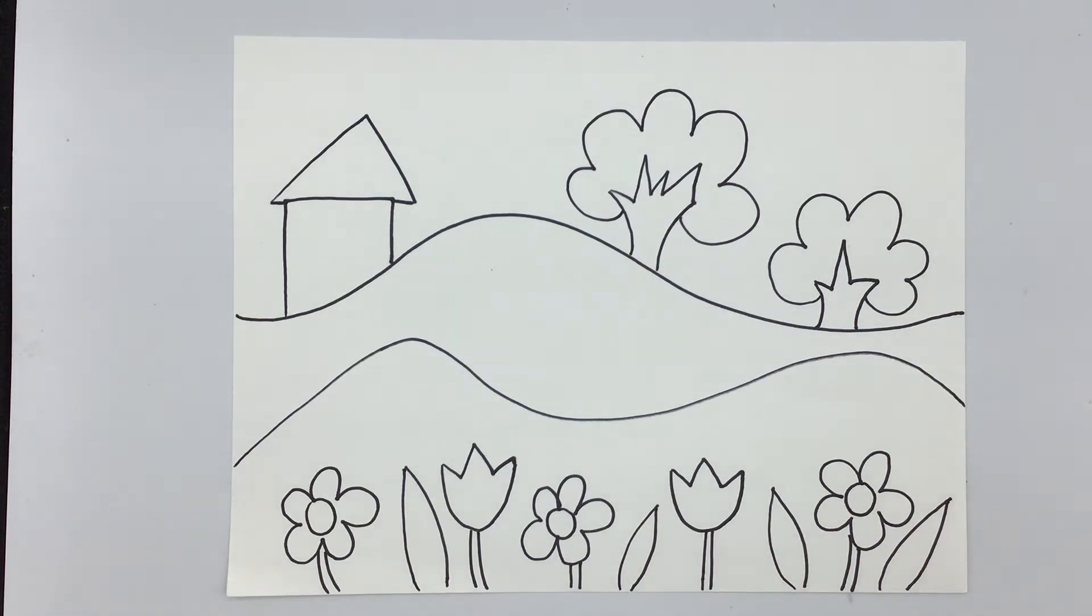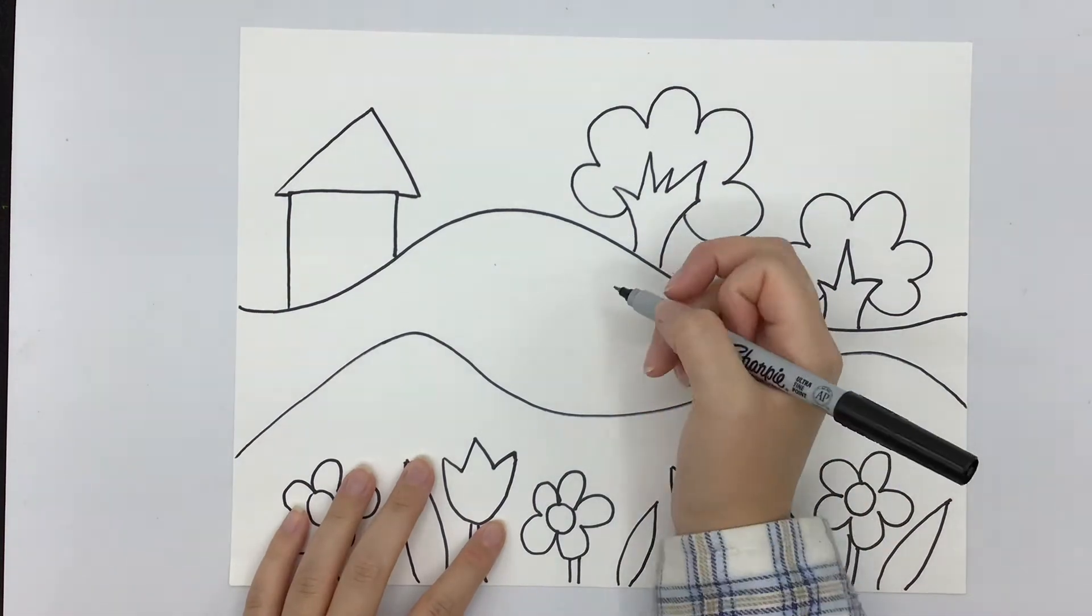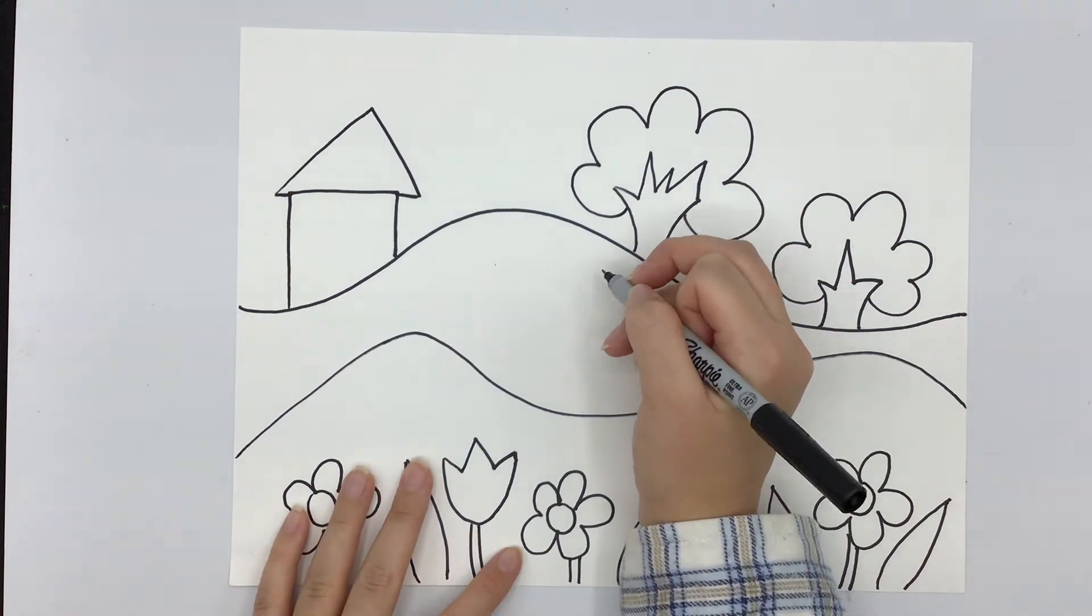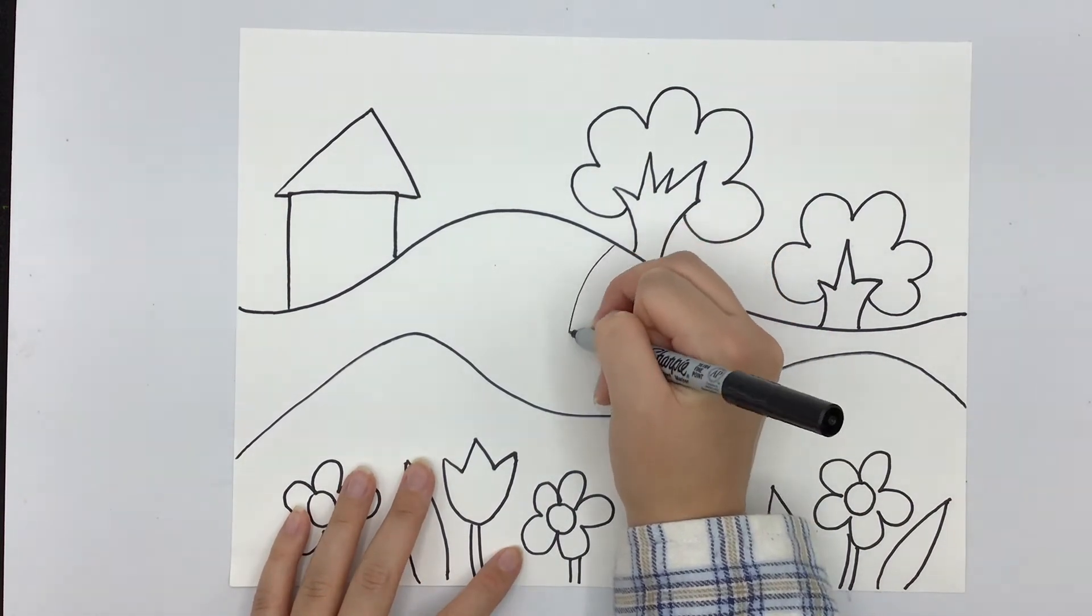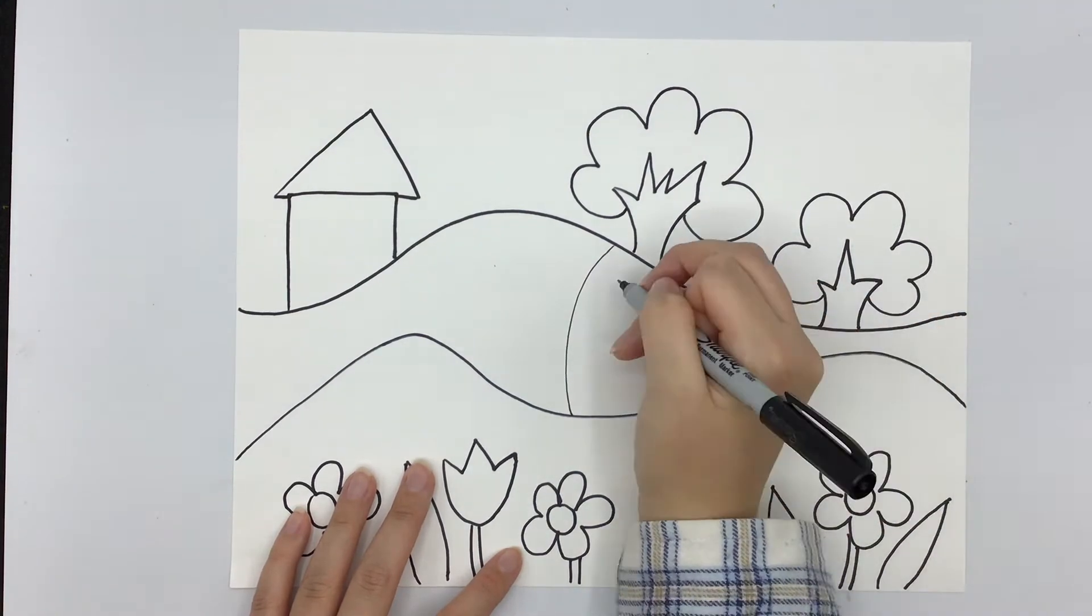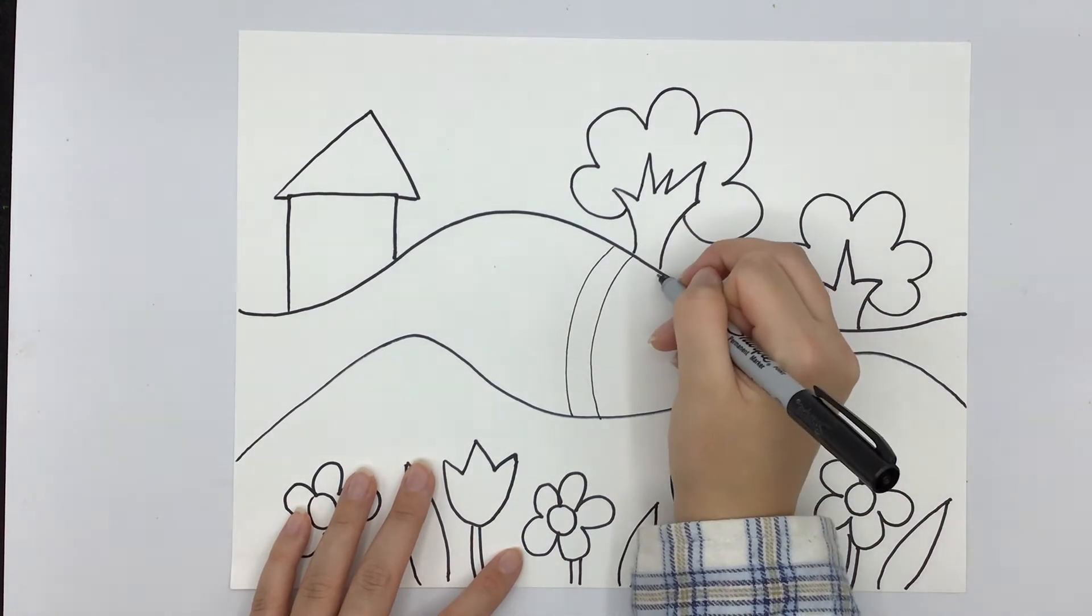And on this space between my two hills I'm going to start drawing some curved lines, and I'm going to try to evenly space them out.